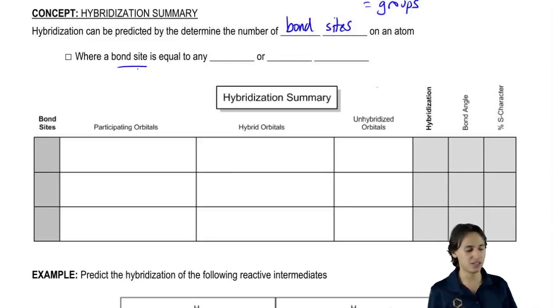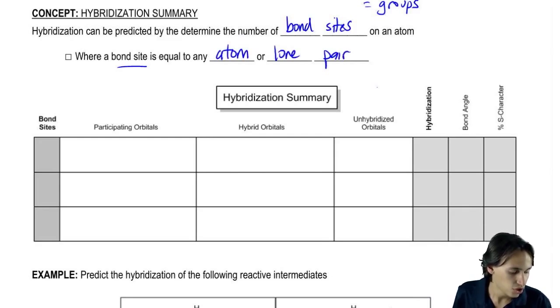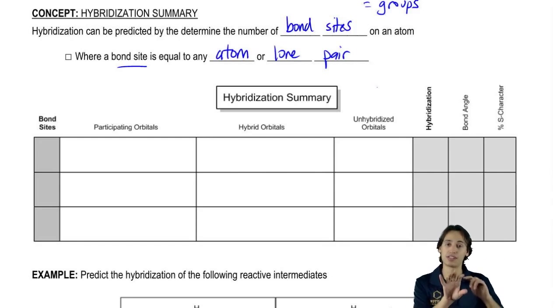So a bond site is going to be equal to any atom or lone pair. Basically any time that an atom is attached to another atom, regardless of what type of bond it is - single, double, or triple bond - all of those count as just one bond site. Why? Because there's only one place that it's attached to an atom. Then a lone pair counts as another bond site because that's a place it could form another bond if it wanted to.